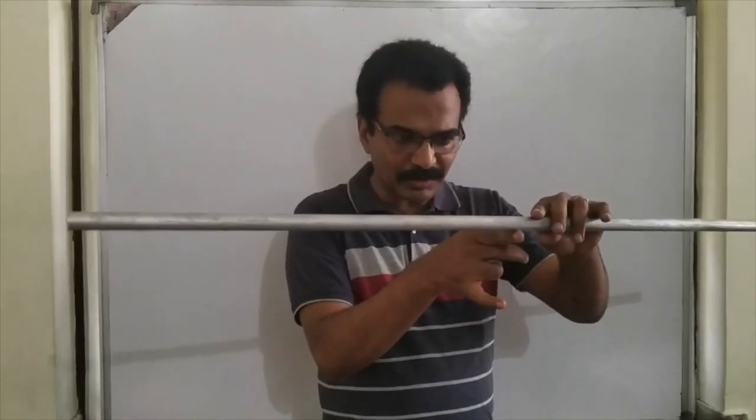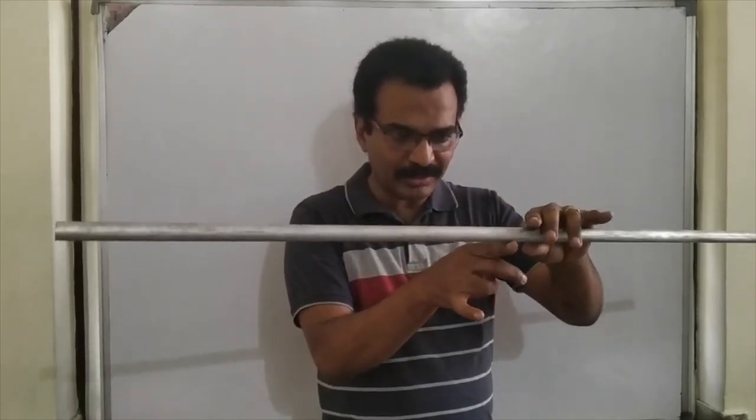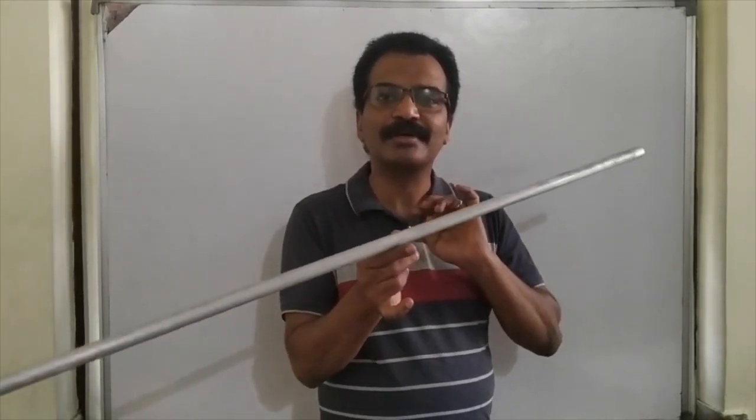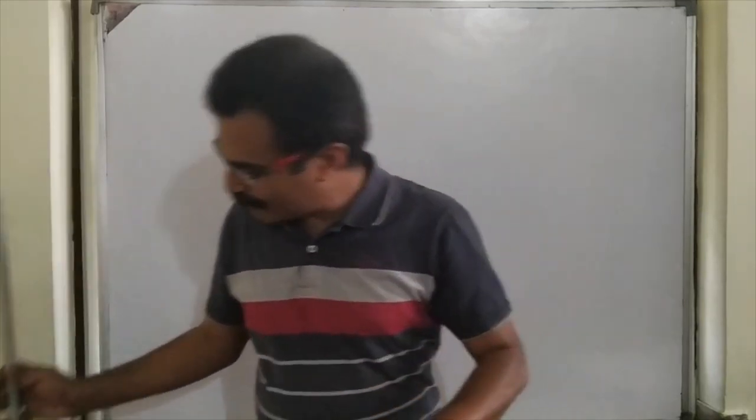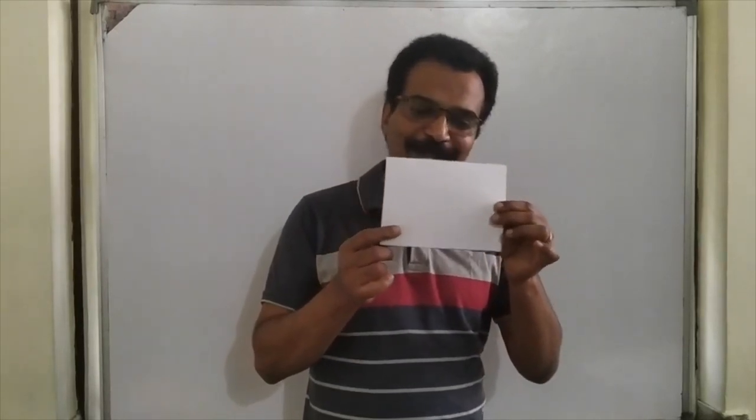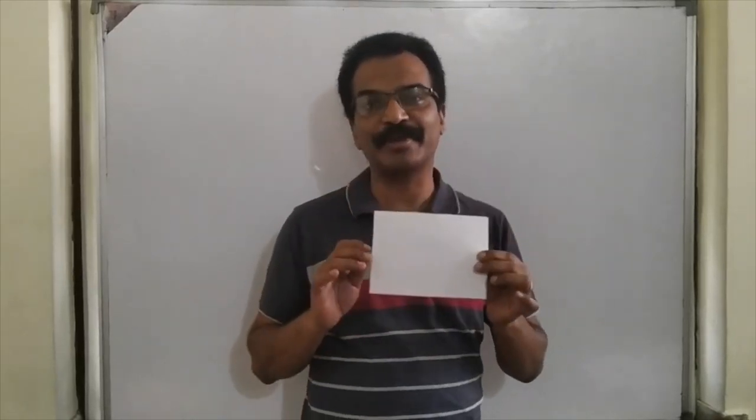The center of gravity of this rod is somewhere inside the rod just above my finger. If I ask you to find the position of center of gravity of a rectangular lamina, you will say that center of gravity is the point where the diagonals meet.